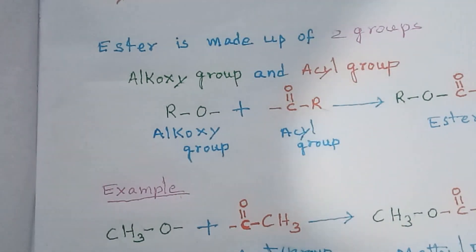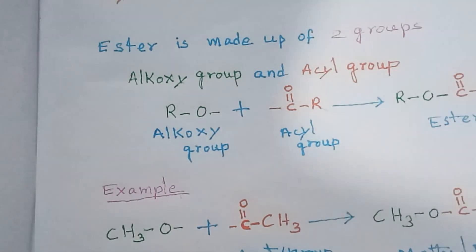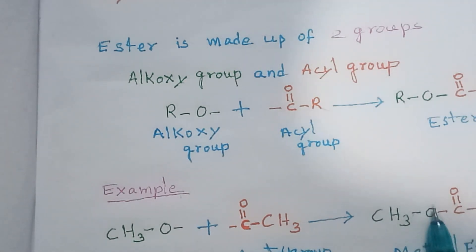So this is how an ester is made up of two groups — the methoxy group and the acetyl group. Thanks a lot for listening.